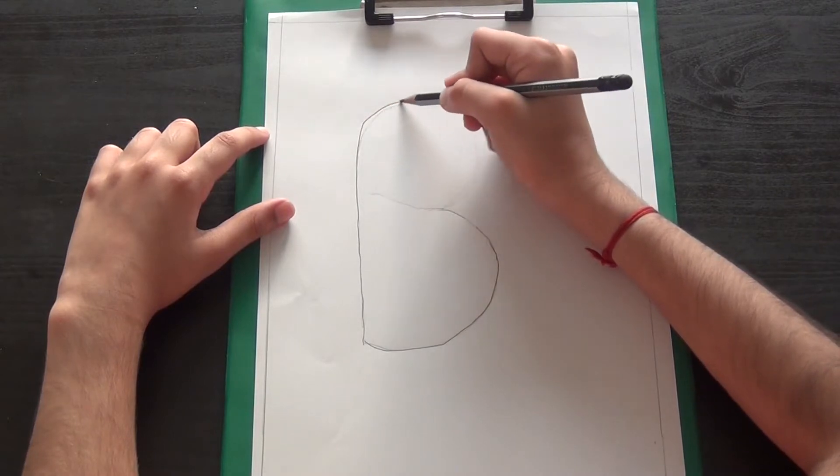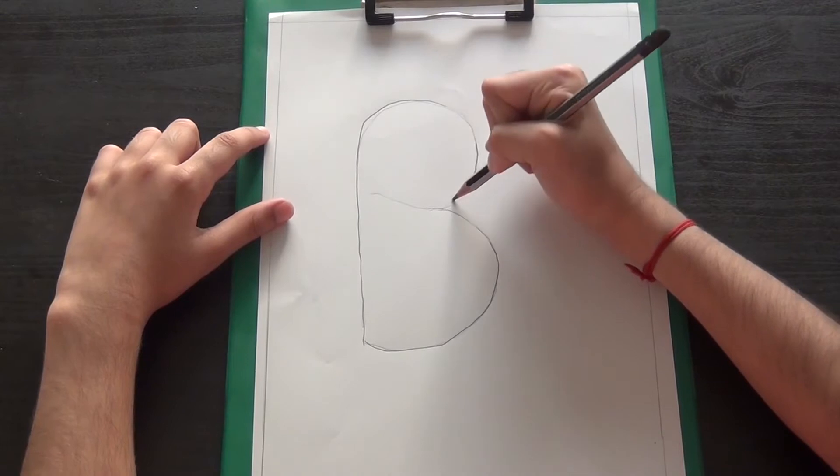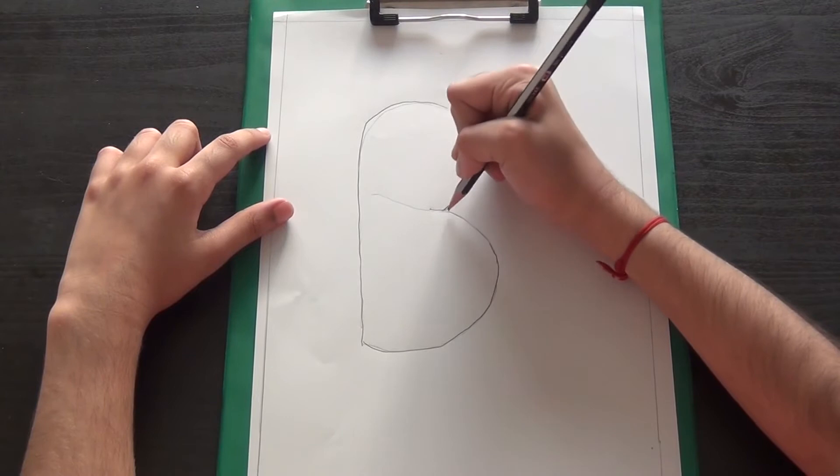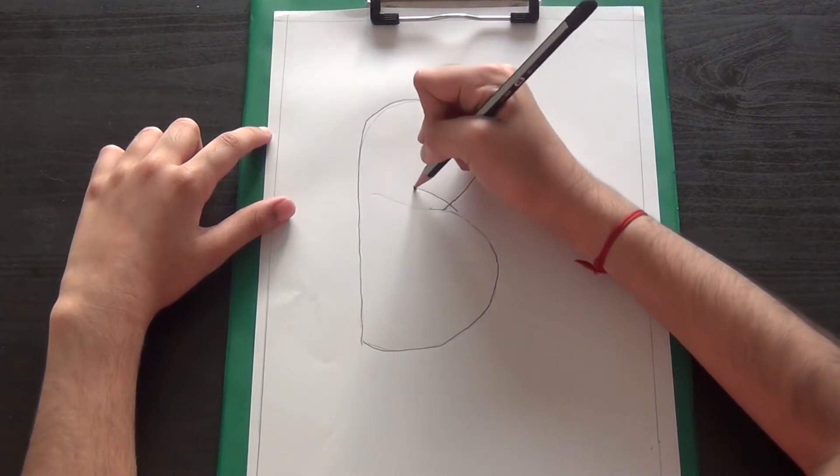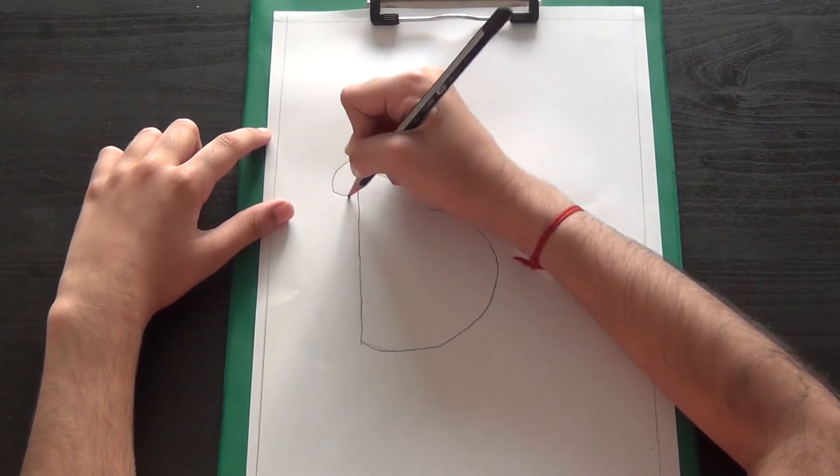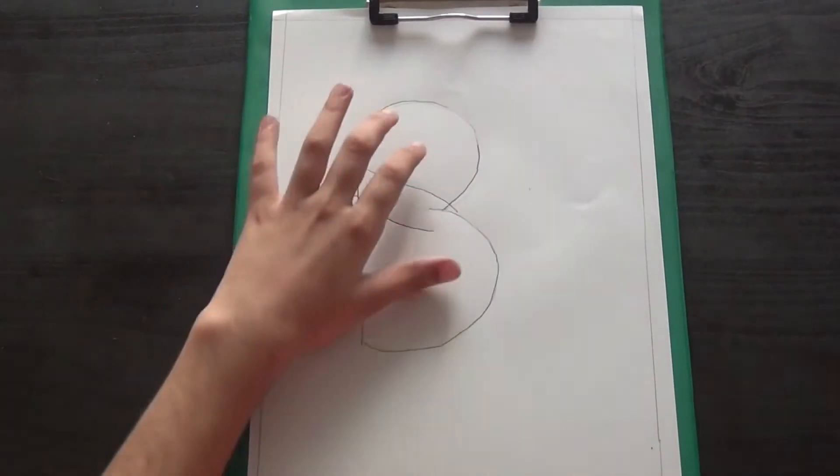So we'll just draw B like this. And then from here we'll start from the hands. Start like this, goes here, and like this. Grab the excess.